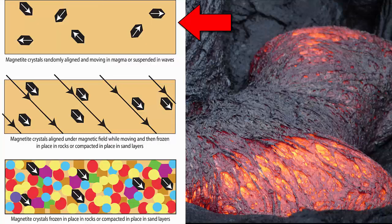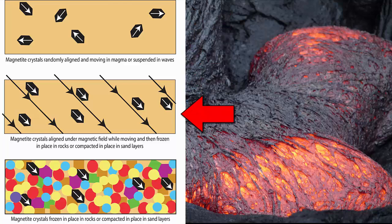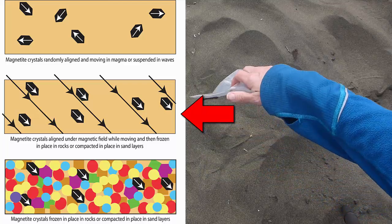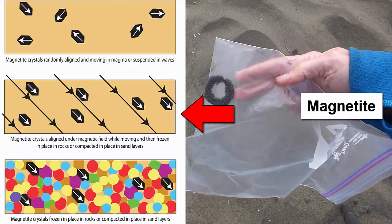As crystals begin to form during cooling, they are free to move. Any magnetic minerals that form will rotate to align themselves with Earth's magnetic field. And there's one magnetic mineral that is found in all volcanic rocks. It is called, strangely enough, magnetite.